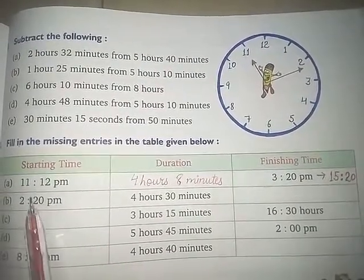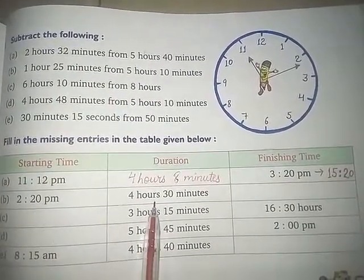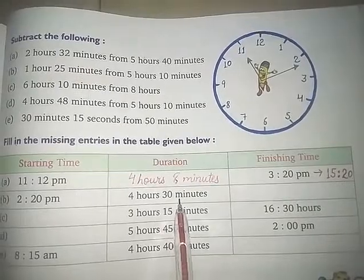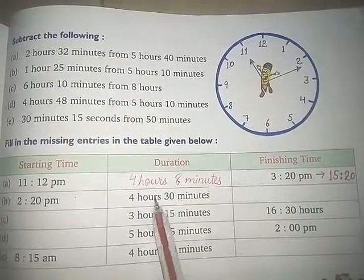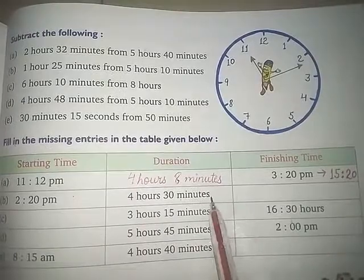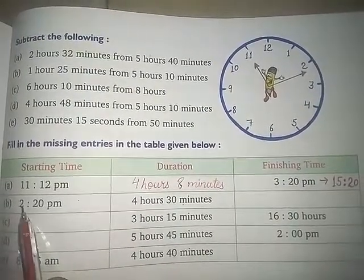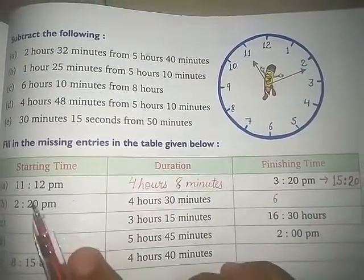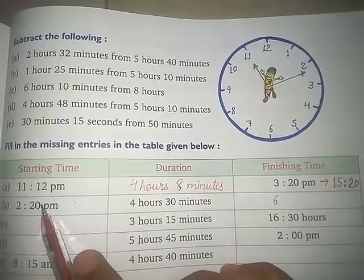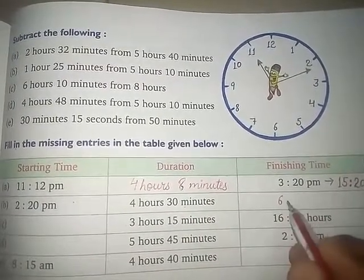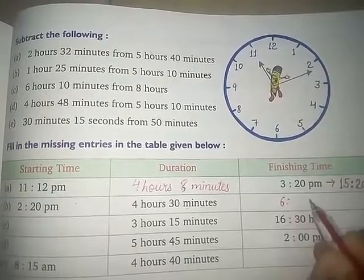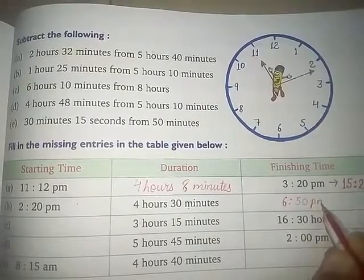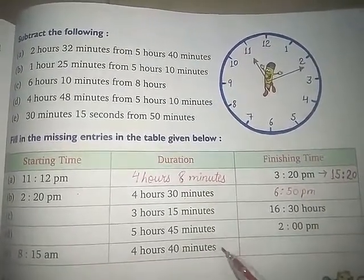Starting time and duration given hai. Matlab aapne ye work is time pe shuru kiya, aur us work ko itna time laga, toh finishing time kya hoga? Then hum starting time mein is duration ko add kar denge, tab hamare paas finishing time aa jaayega. 2 hours mein 4 hours add karne hain, toh 2 aur 4 — 6 hours. Aur 20 minutes aur 30 minutes — 50 minutes. So 6:50 PM aapka answer aa jaayega.